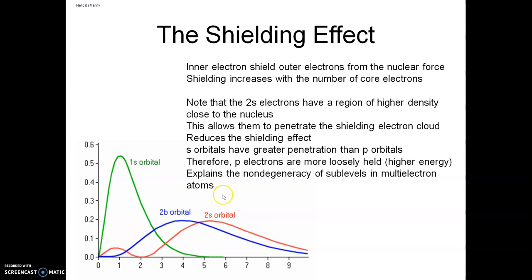This also, you may recall, explains the non-degeneracy of the sub-levels in multi-electron atoms. With hydrogen, you only have one electron. There's nothing to shield. With everything else, you have stuff down here in 1s and it's going to shield the outer electrons. So again, that's a nice recap of the shielding effect as we've talked about it.